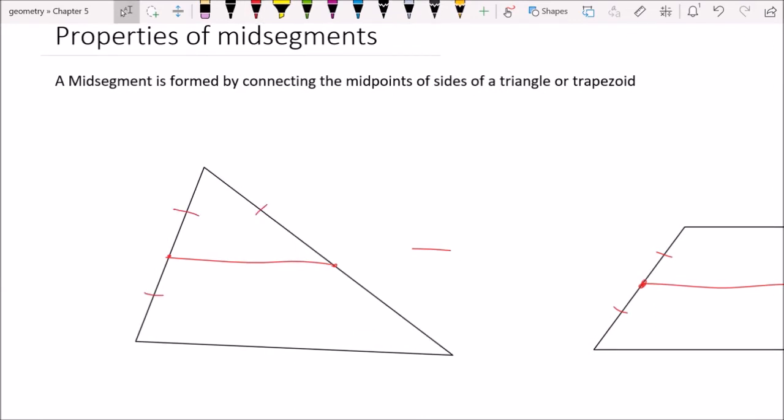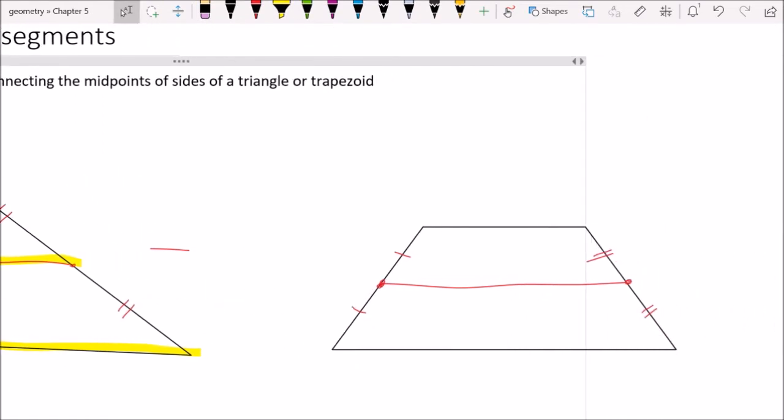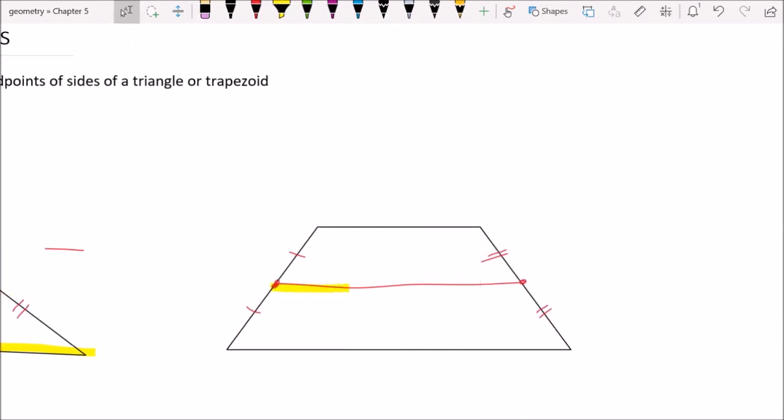Now, there's a couple key things that we're going to notice about a midsegment. The first thing that I hope you can see just visually is that the midsegment is parallel to this other side down here, which we might call the base. In a trapezoid, it's the exact same thing. This midsegment, it's parallel to both bases. So, that's the first thing, that parallel relationship.